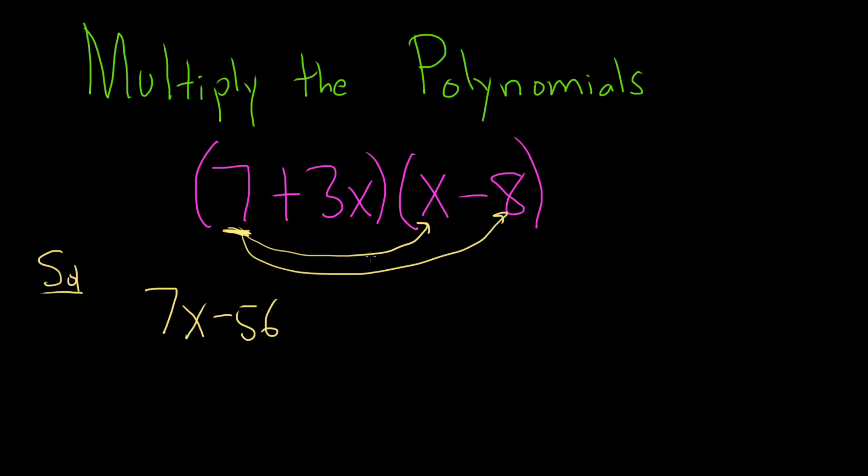Then you just go to the next one. So now you go to 3x. So 3x is here, and you do the same thing. You multiply it by all the ones over here on the right. So 3x times x is 3x squared. And then 3x times negative 8 is negative 24x. For some reason, that was difficult. 3 times 8 is 24.